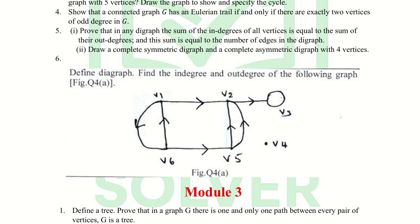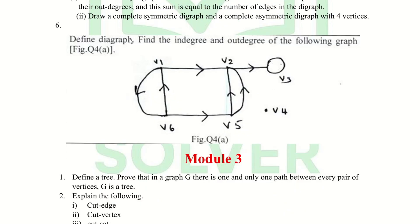The fifth question has two sub-questions: (a) prove that in any digraph the sum of the in-degrees of all vertices is equal to the sum of the out-degrees, and this sum equals the number of edges in the digraph; (b) draw a complete symmetric digraph and a complete asymmetric digraph with four vertices. The last question is: define a digraph and find the in-degree and out-degree of the given graph.